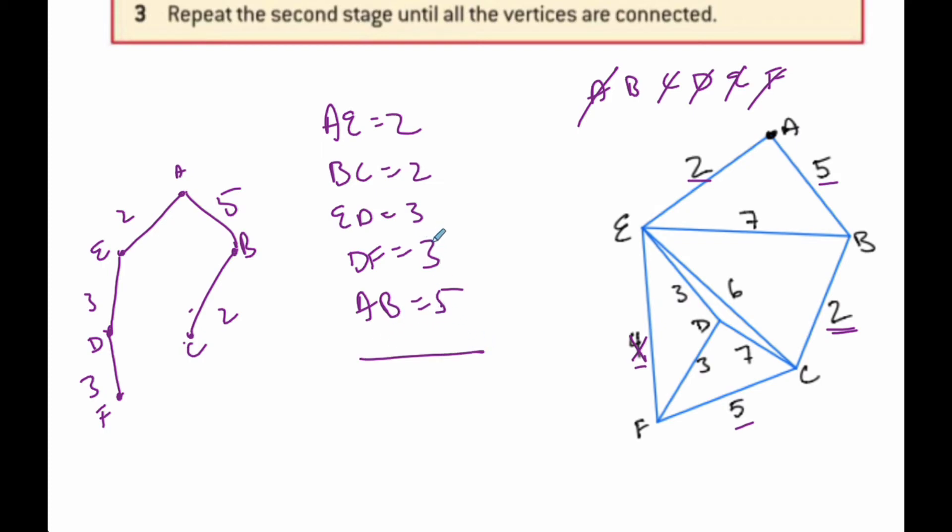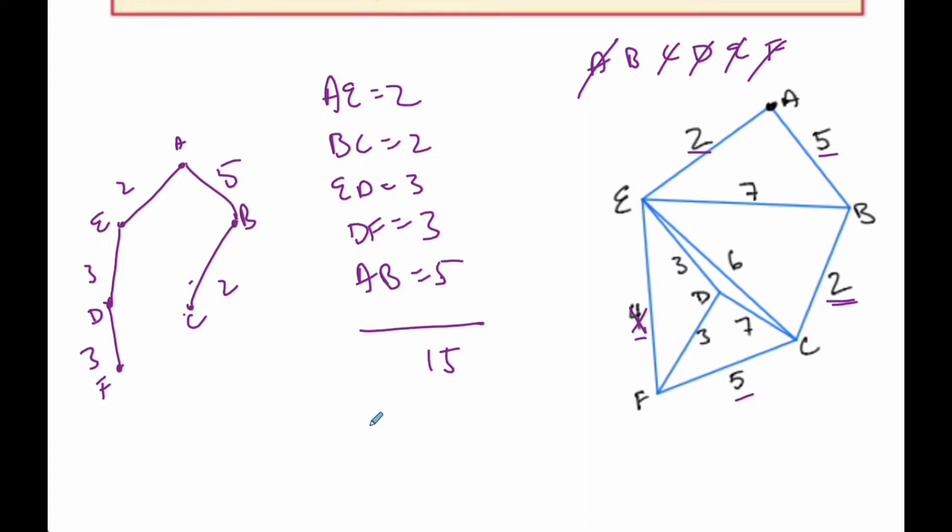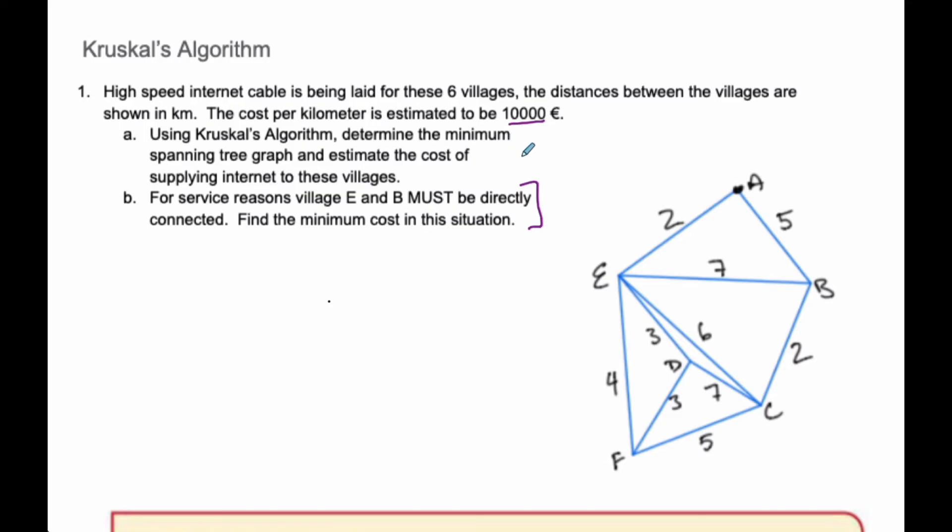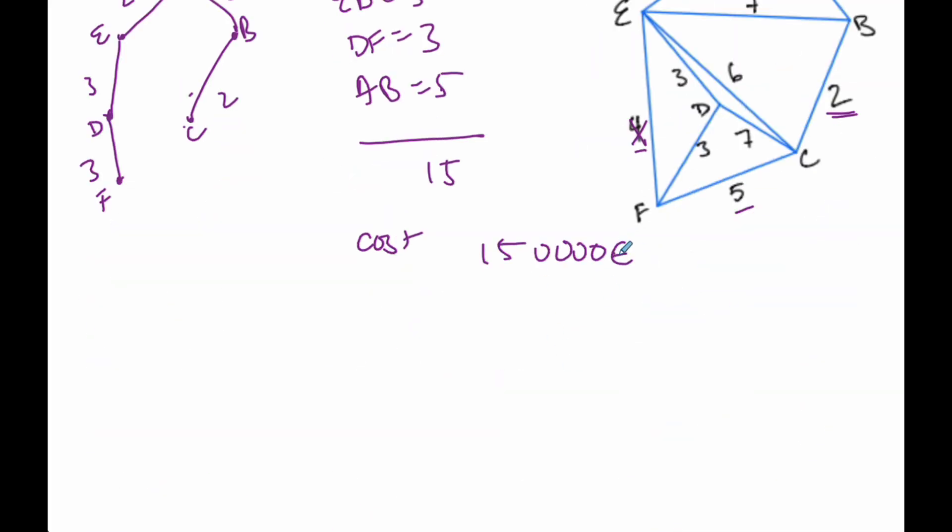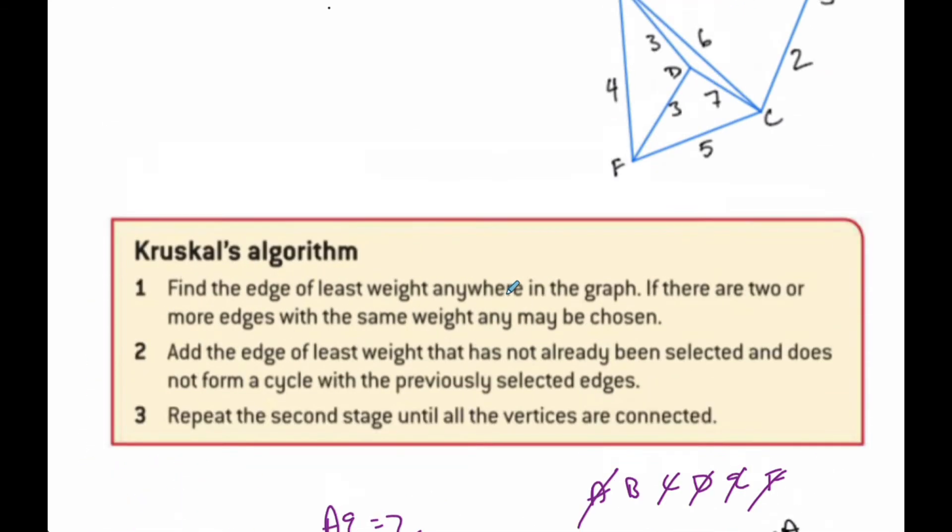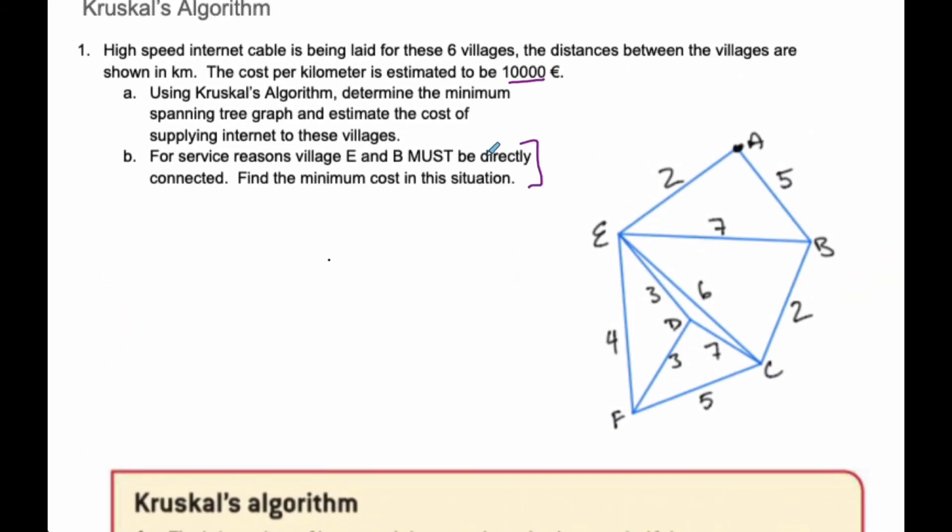I have 10, I have 15. So in total, the cost will be 150,000 euros if each kilometer is 10,000 euros. This is the cost of laying this high-speed internet cable between these villages.